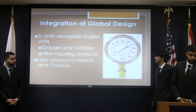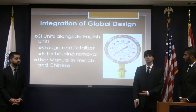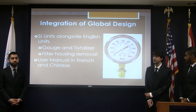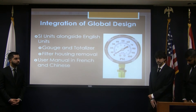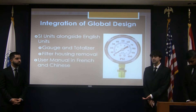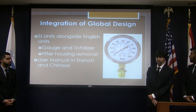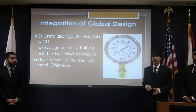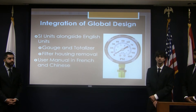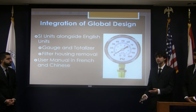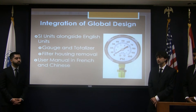For global design, we're somewhat constrained to the English system of units since we're working in the aerospace industry in the United States. However, we can incorporate the metric system in a couple of ways. Specifically, in our gauge and totalizer we can have both units side-by-side as shown here. Also, our filter housing can be removed with a hand wrench, so we can modify that design to use either a standard metric wrench — like 17mm — or English system, whatever is easiest for the current application.